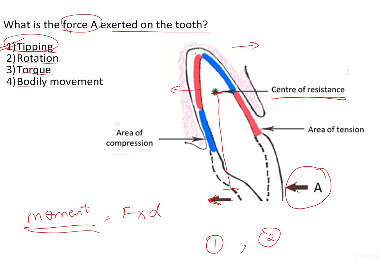This can be appreciated by the loading diagram marked in red and blue, which tells us the areas experiencing tension and the areas experiencing compression. The root is moving in one direction, causing compression in that area, while the crown is moving lingually, which is why the lingual area is being compressed. This loading diagram shows how the periodontal ligament is being loaded when the force is applied.